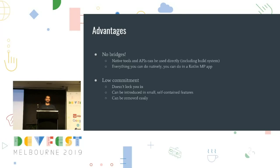One really good advantage is that it's very low commitment. Since you're sharing code, you can choose which code to share. You can share everything, or you can test it on just one small feature — try Kotlin Multiplatform on that feature only. If it doesn't work out, what's the worst that can happen? You just write it in iOS code natively; it's already there for Android. It's really easy to remove. It doesn't lock you in at all because you write your application as a normal Android or iOS project — not going all in on React Native or Flutter.